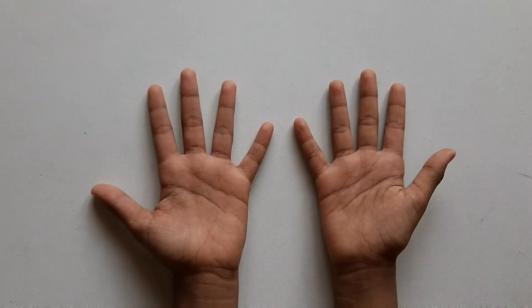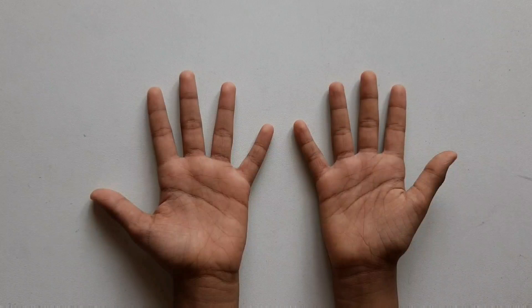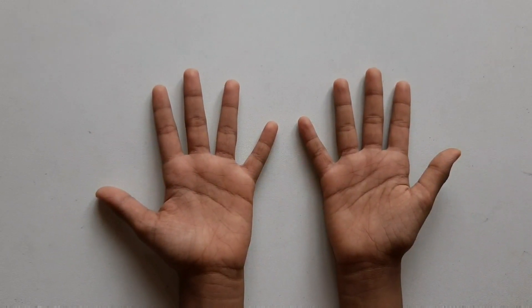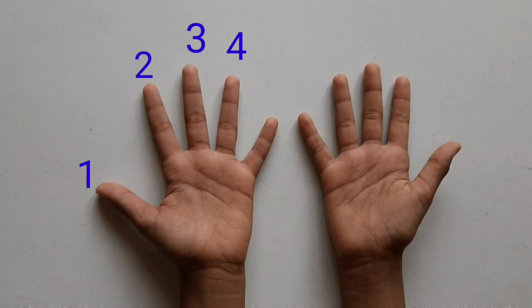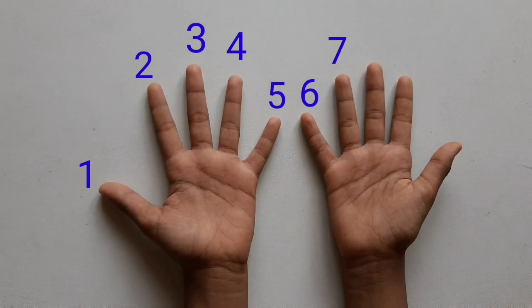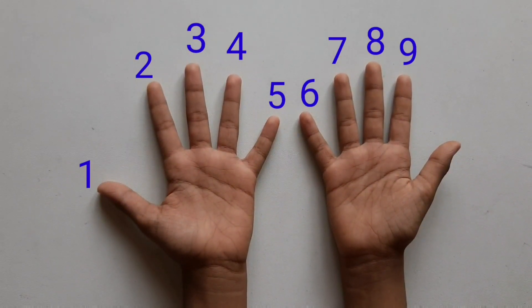First, keep your palms facing towards you and number them from left to right: 1, 2, 3, 4, 5, 6, 7, 8, 9, 10.